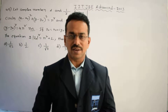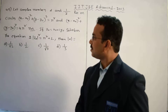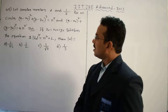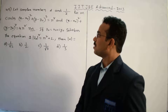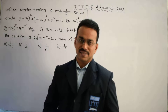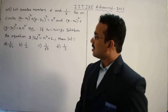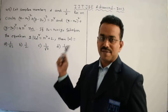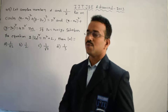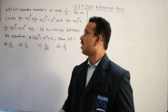Our task is to calculate the value of |α|. In the given question there are two circles. One circle is (x - x₀)² + (y - y₀)² = r², that is a circle with center (x₀, y₀) and radius r. The other circle has the same center (x₀, y₀) and radius 2r, since 4r² = (2r)².